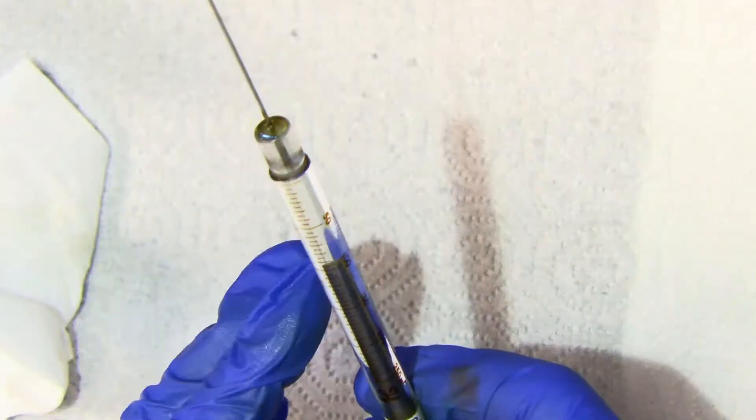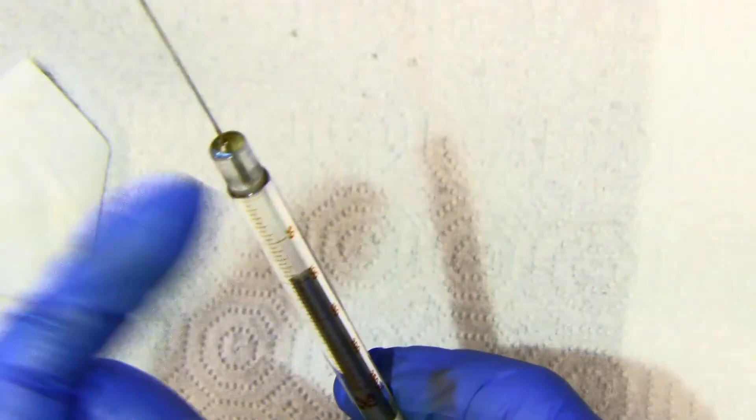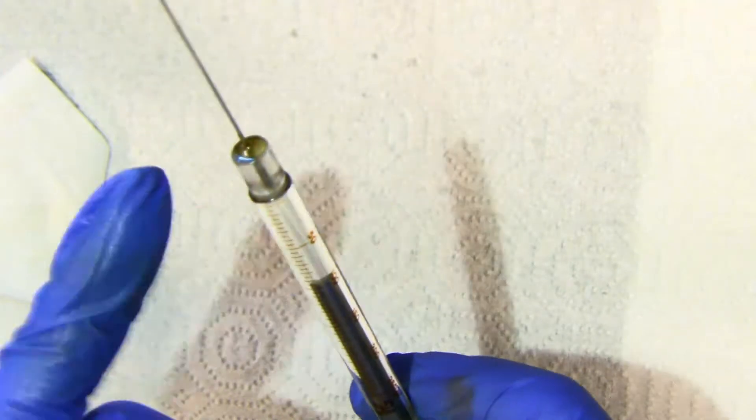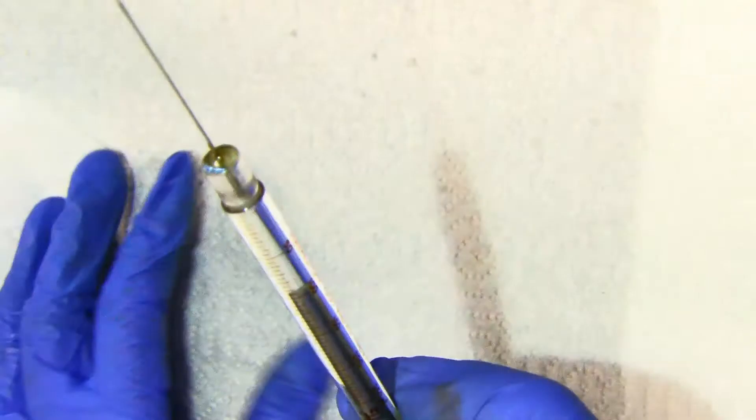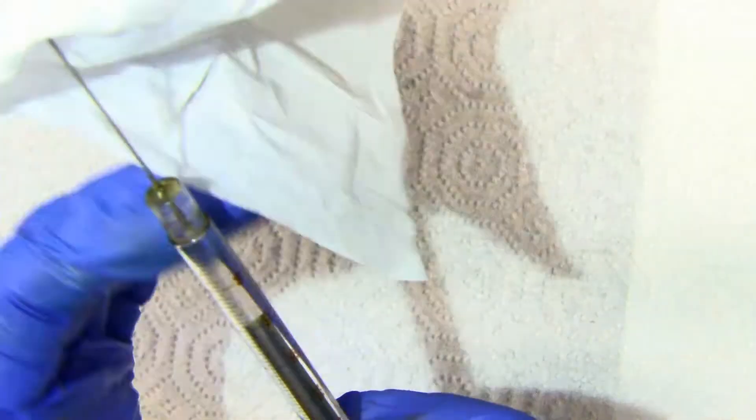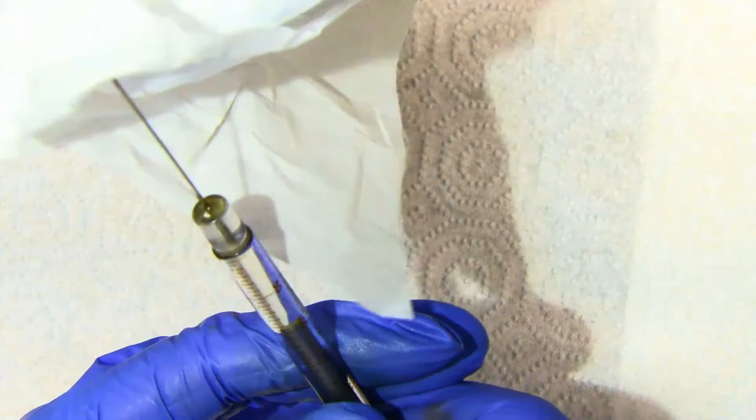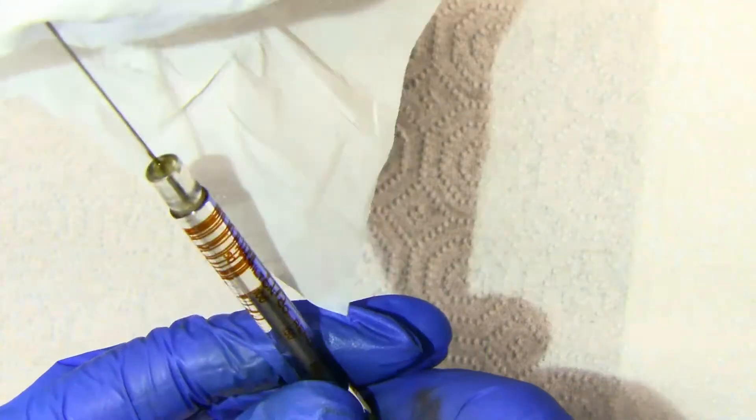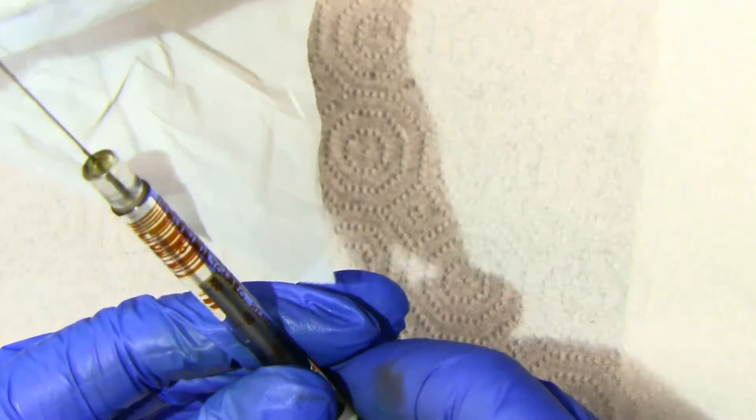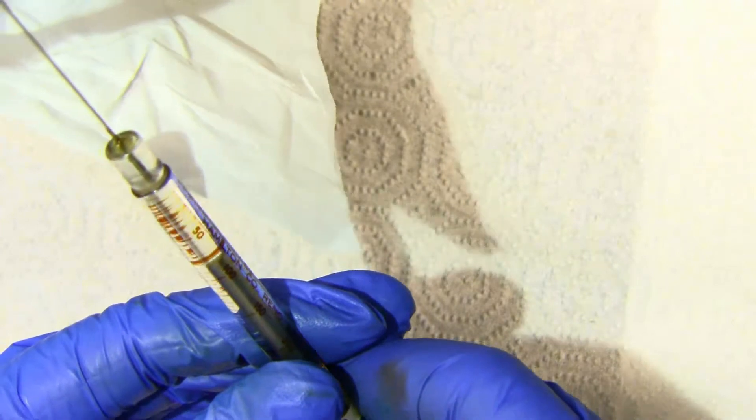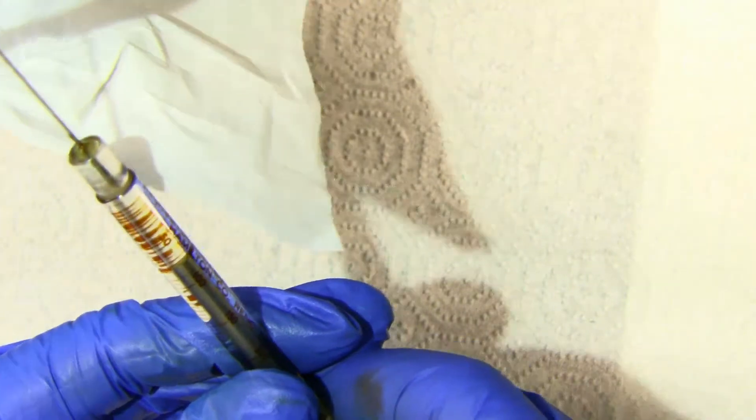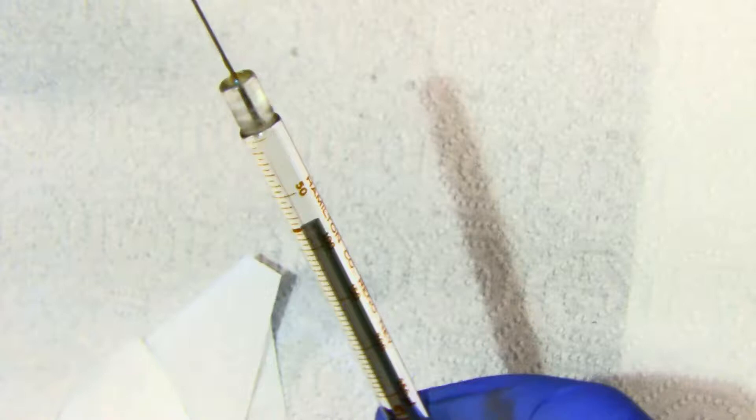With the needle straight up, you may have to tap to get the air bubble up to the top. Once you do that, put a little chem wipe over the end and eject until you get to the amount that you want. The excess will be coming out in the chem wipe. Make sure you have your syringe pointed away from you.